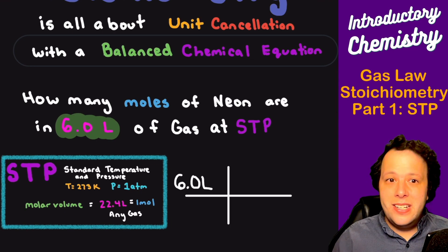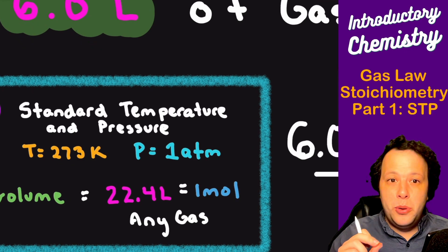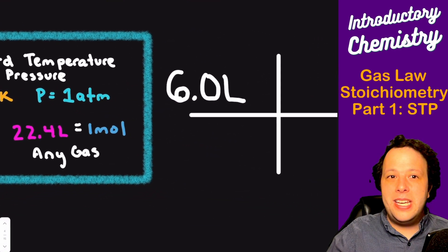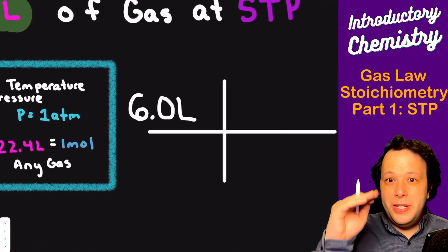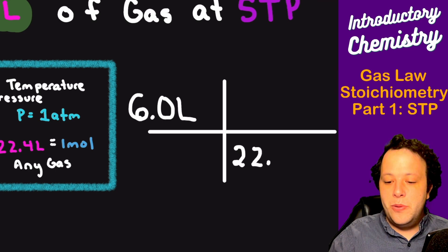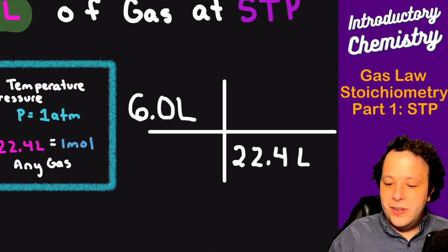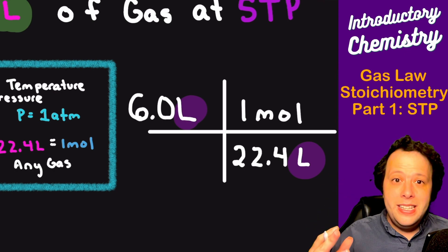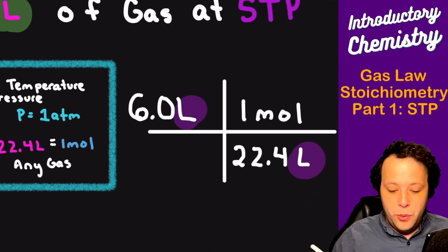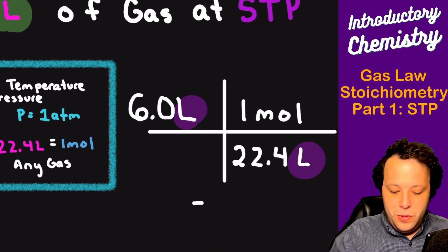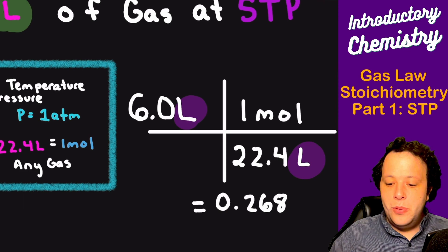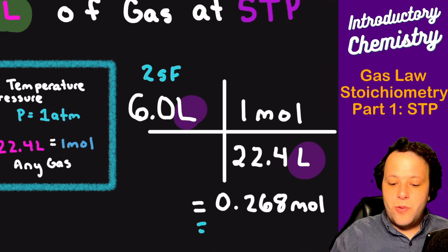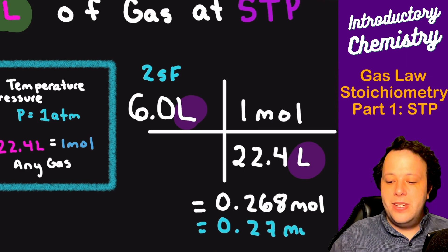The first thing is if we notice is that it starts with a given number. Always write down your numeric values; nine times out of ten they are important. So we have six liters. Now being that this is STP, we can use the molar volume, which was 22.4 liters is equivalent to one mole. We want to cancel our units, so we have liters on top, we need liters also on the bottom. We now see that our units are going to cancel, which is fantastic. So we do six divided by 22.4 and we get 0.268 moles. Being that we started with two significant figures, we round this to 0.27 moles.